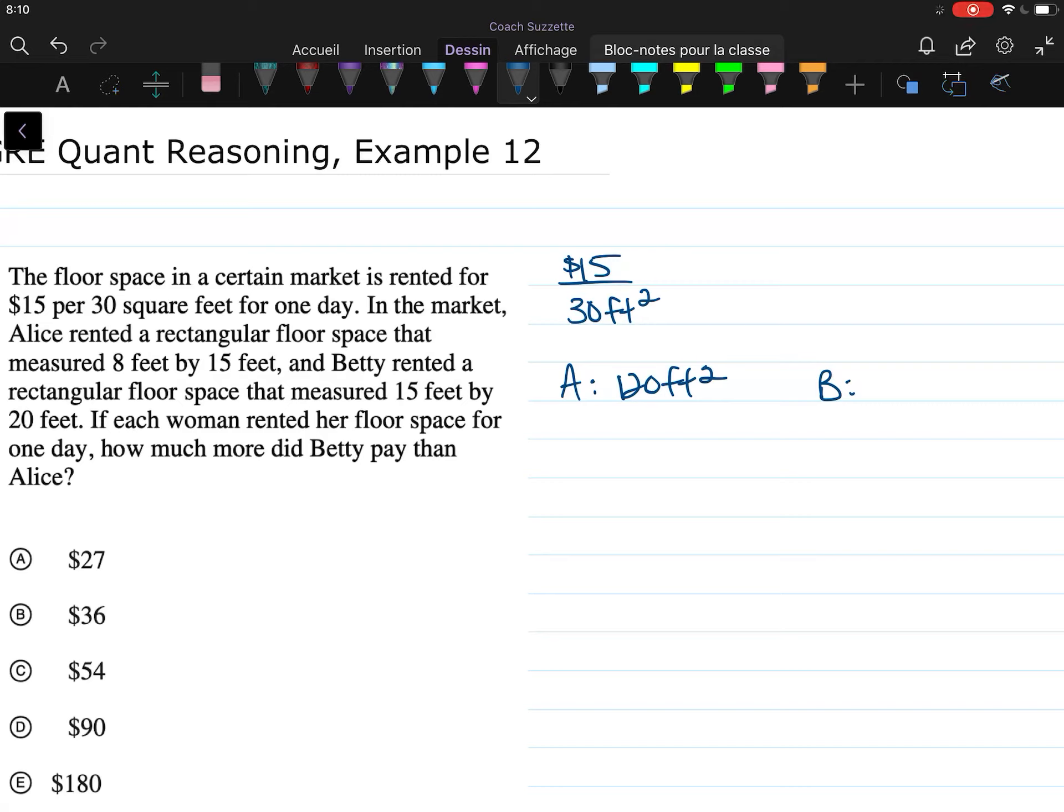15 times 20 is 300 square feet. Okay, so how many 30s are there in 120? Four. So that means Alice paid $60.